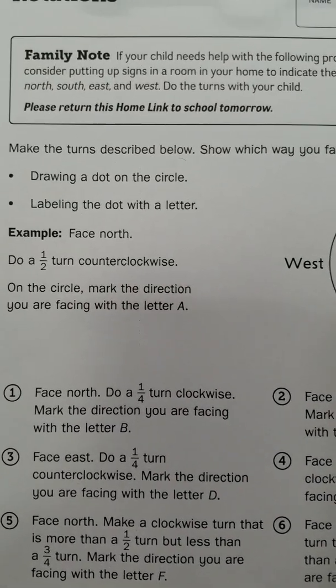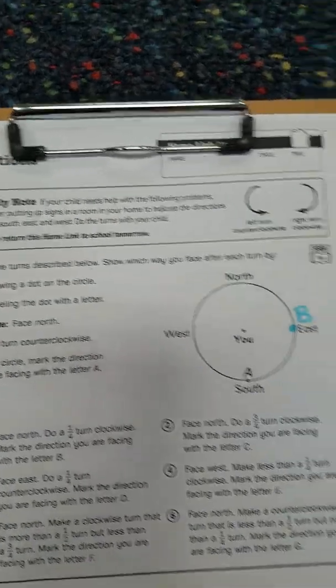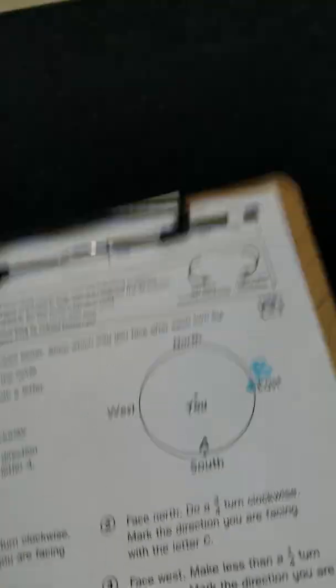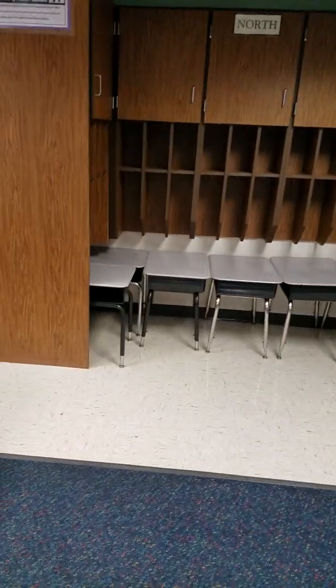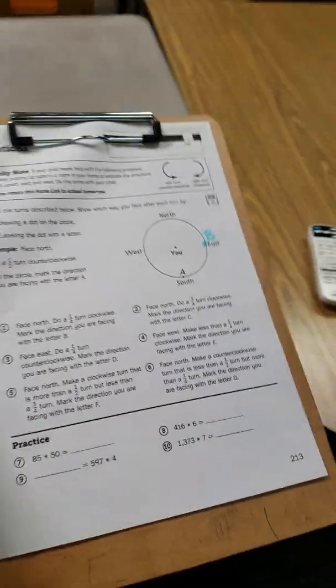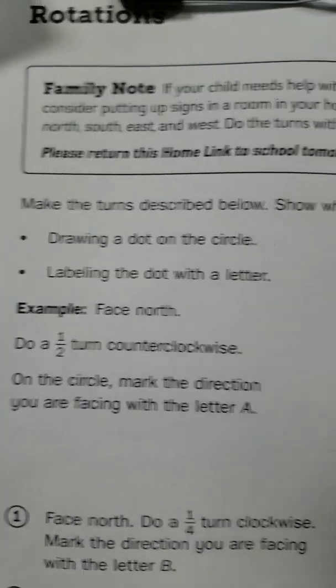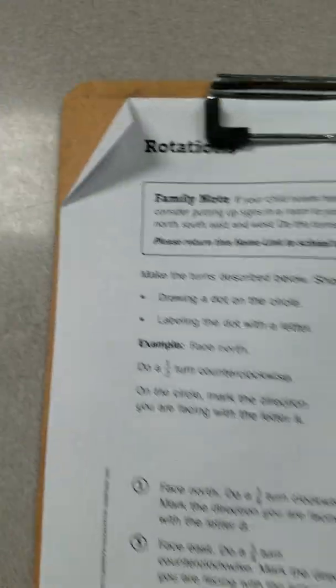Let's try number two. Number two says face north, do a three quarters turn clockwise and mark the direction you are facing with the letter C. So again I'm going to restart at north and then I'm going to turn three quarters of the way. I'm going to turn clockwise, there's one quarter turn so I'm facing east, another quarter turn now I'm facing south, now here's a third quarter turn and look at that I am facing west. It's hard to see because it's in the shadow of my screen but that indeed is west. So again when I look at my paper, it says mark the direction you are facing with the letter C so I am going to put that right here and I'm going to use orange so we can see the difference in colors.